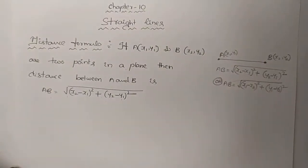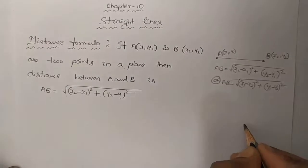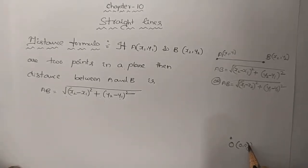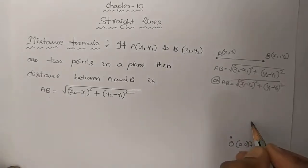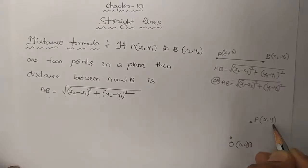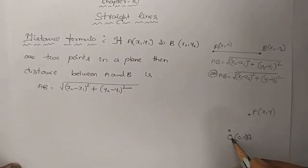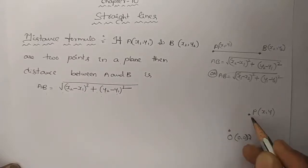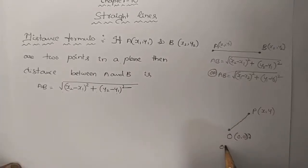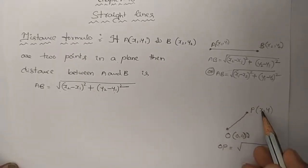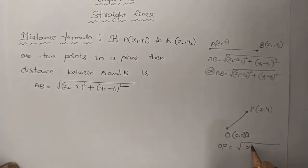Suppose we have the origin and suppose we have the point P. The distance from the point P to the origin — here we have the origin, and here we have the point P, that point will be (x1, y1) or whatever it may be. The distance between the point P and the origin: OP equals to square root of (x2 minus x1) whole square plus (y2 minus y1) whole square. So x minus 0 whole square is x squared, plus y minus 0 whole square is y squared.